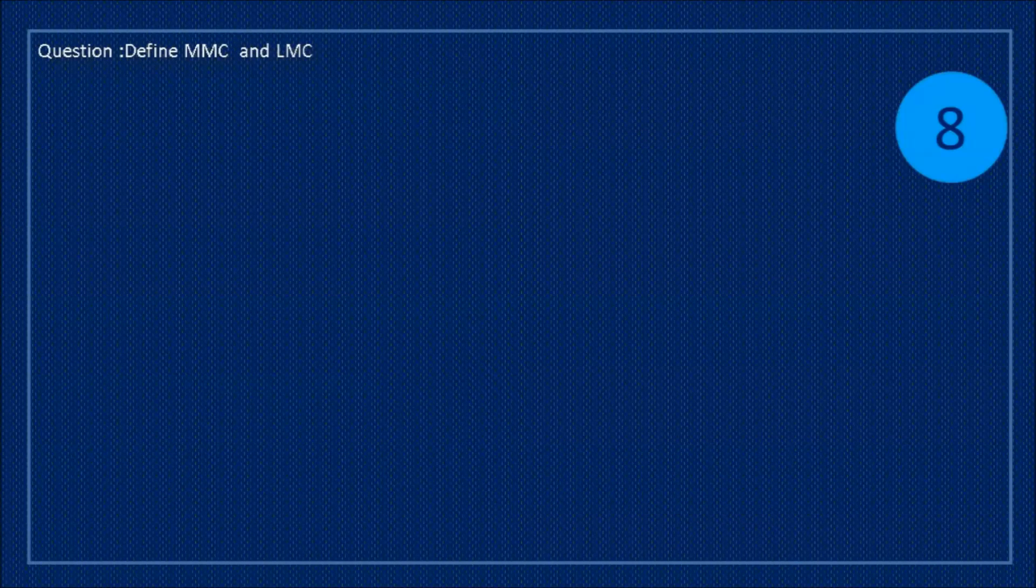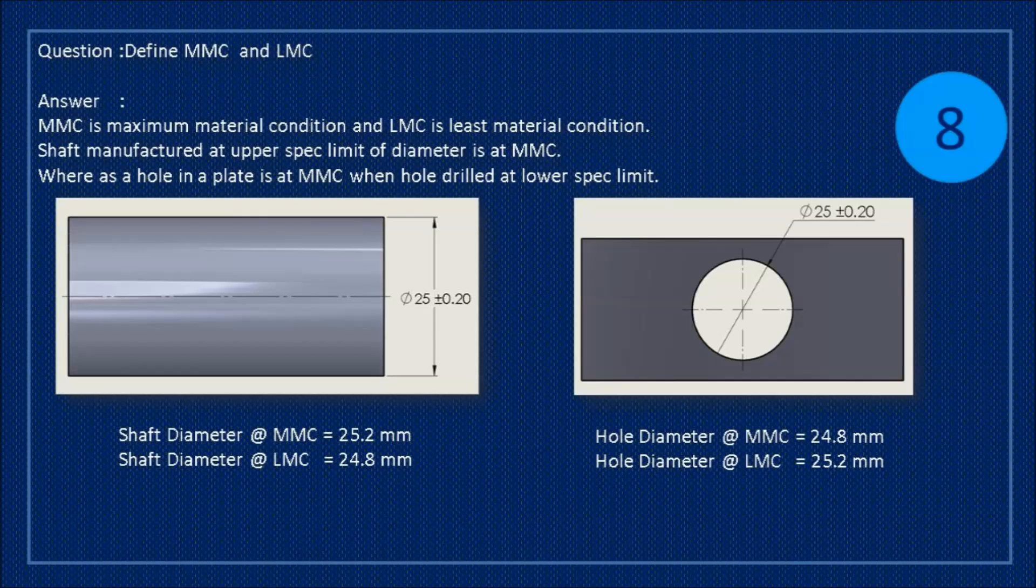Question: define MMC and LMC. Answer: MMC is maximum material condition and LMC is least material condition. Shaft manufactured at upper spec limit of diameter is at MMC. Whereas a hole in a plate is at MMC when hole drilled at lower spec limit.